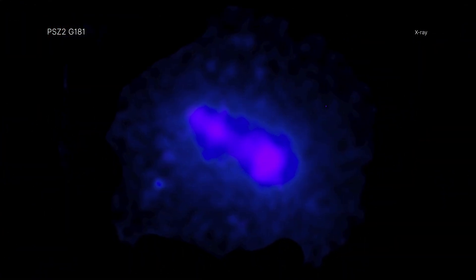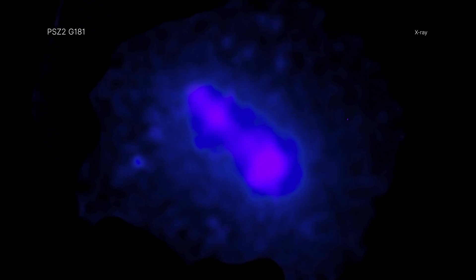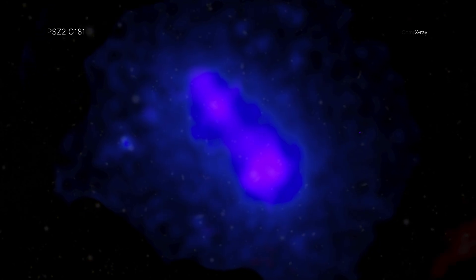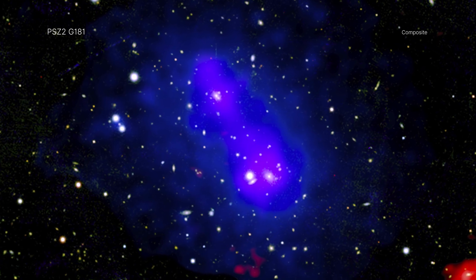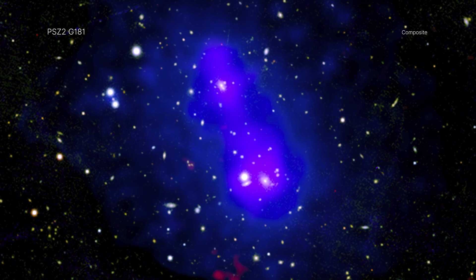Now, data from NASA's Chandra and ESA's XMM-Newton is providing evidence that P.S.Z.2 G.181 is poised for another collision. Having had a first pass at ramming each other, the two clusters have slowed down and begun heading back toward a second crash.